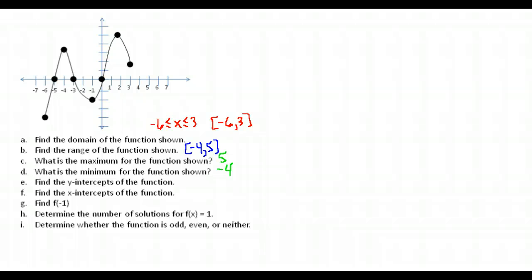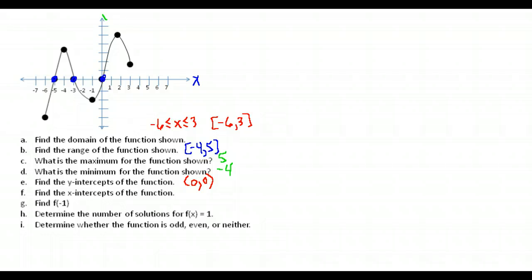Find the y-intercepts. A y-intercept is the place where the graph crosses the y-axis, the vertical axis. The only point where it crosses is (0, 0), so the y-intercept is the point (0, 0). The x-intercepts are the places the graph crosses the x-axis, or horizontal axis. There are three x-intercepts: (-5, 0), (-3, 0), and (0, 0).